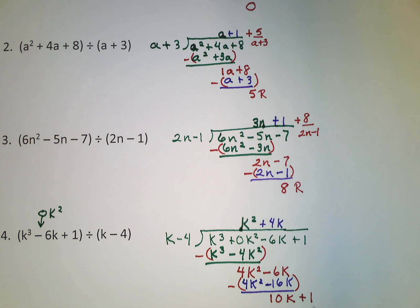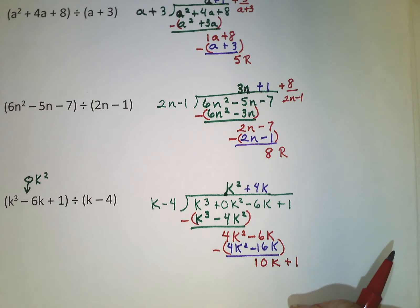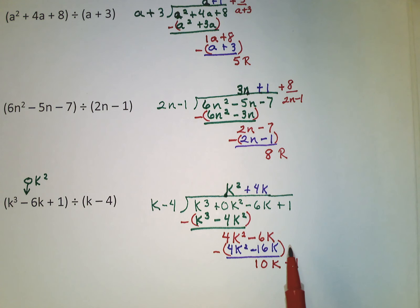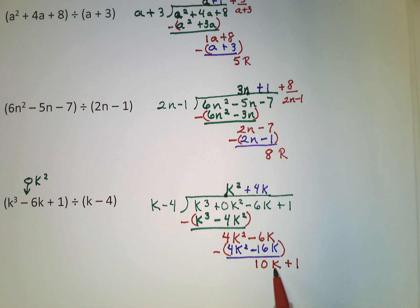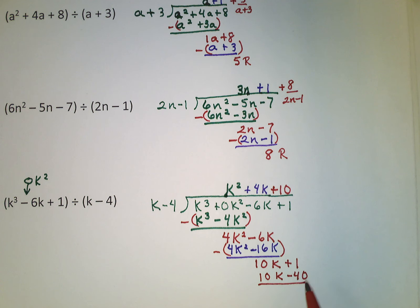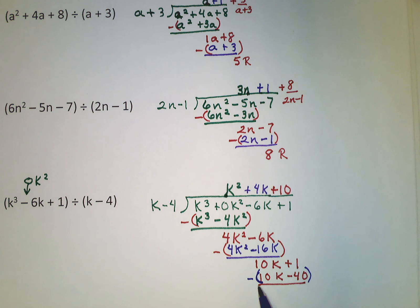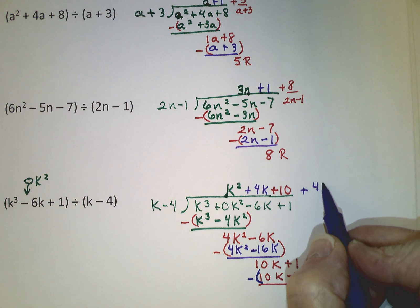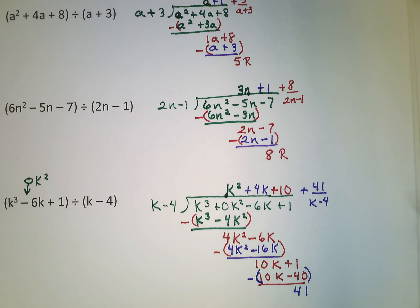What do we multiply times k to get 10k? That's 10, a positive 10, so I put plus 10 up here. Then 10 times the entire (k minus 4) gives 10k minus 40. We subtract both of those: 10k minus 10k cancels out, and 1 minus negative 40 is like 1 plus 40, giving 41 as our remainder. So we write plus 41 over (k minus 4) as the fractional part. It looks terrible but it's not too hard!